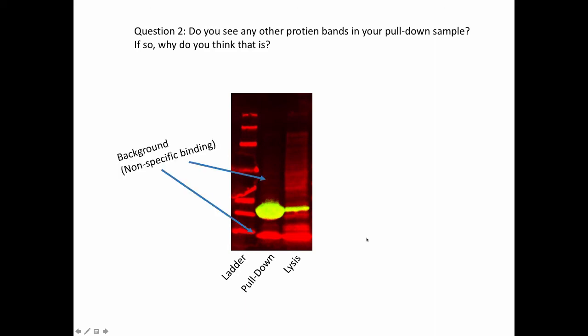You can see a large band down here and you can see some faint bands up here—we call this background. What we mean by background is just proteins that bind non-specifically to the agarose beads. If you do see proteins in your pull-down sample that are red but they are not green, that tells you that these are background bands and they non-specifically bound to the agarose and that's why you see that.